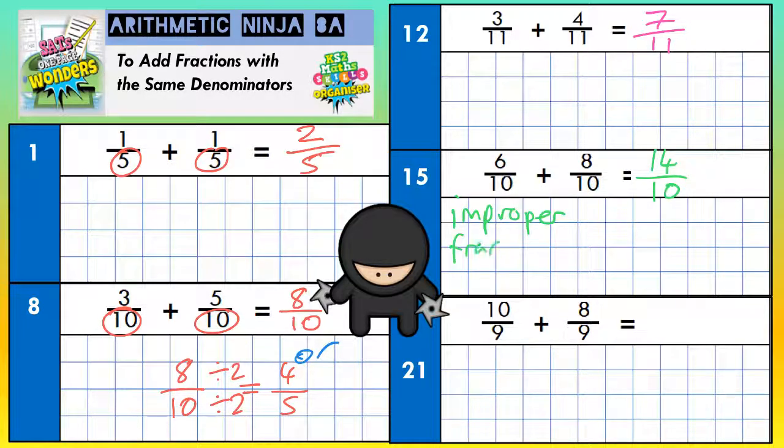We can tell that because the number on top, fourteen, is bigger than the number underneath, ten. Now, in year six, you can leave improper fractions as improper fractions. But if you want to go a stage further, you could turn it into a mixed number. To turn it into a mixed number, fourteen-tenths is the same as fourteen divided by ten.